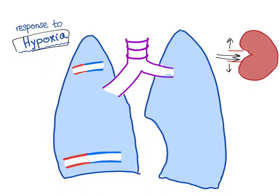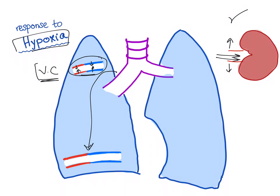Why is the lung different? Because in the lung, say we have a problem in one portion — they vasoconstrict, i.e. they narrow. And why is that? To save the blood for the good portions of the lungs that have normal physiology and can normally handle the blood. So the normal physiologic response in the lungs to hypoxia is vasoconstriction.